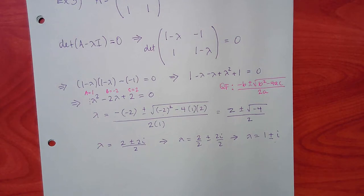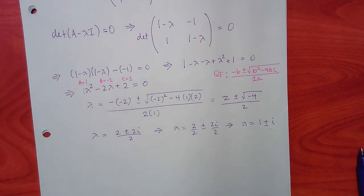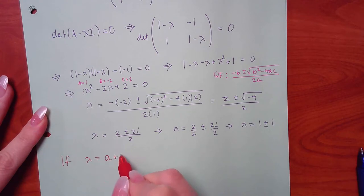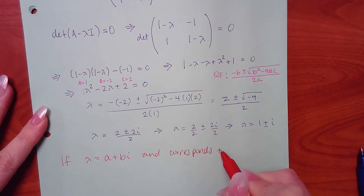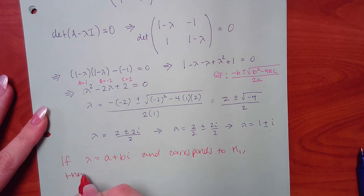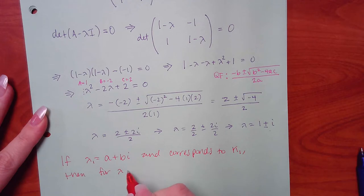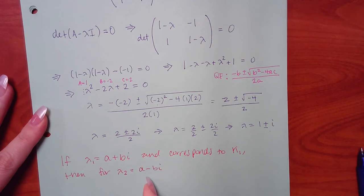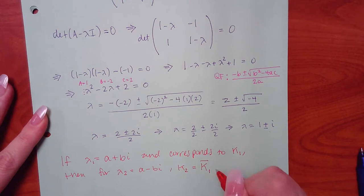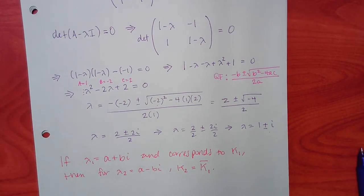You only have to find K1 once, then take its conjugate to get K2. Remember: when taking the conjugate, only the imaginary parts change sign — the real parts stay the same. Be careful not to flip everything.